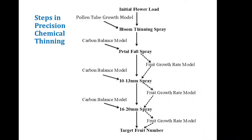Good afternoon, ladies and gentlemen. It's an exciting time of year and I'm very enthused to talk about blossom thinning at this meeting. I'll start with a small review of the steps in precision chemical thinning, which really begins with the blossom thinning spray guided by the pollen tube growth model. This particular meeting date is ideal because we're just now in the middle or starting this blossom thinning period. We'll talk about the specifics of the model and how this might lead to sprays within the next two to three days — maybe sooner.